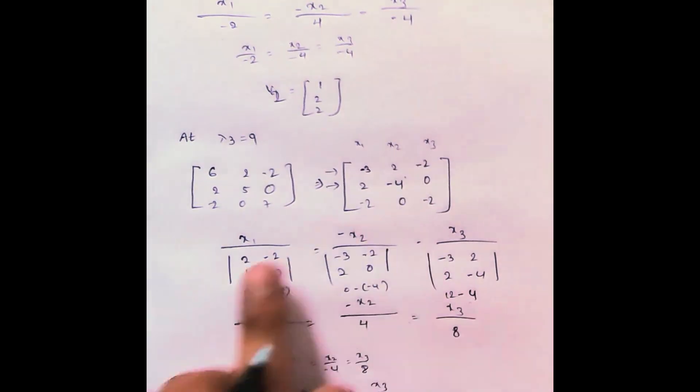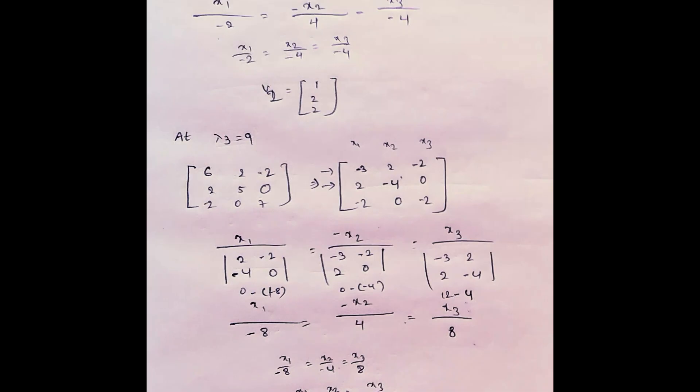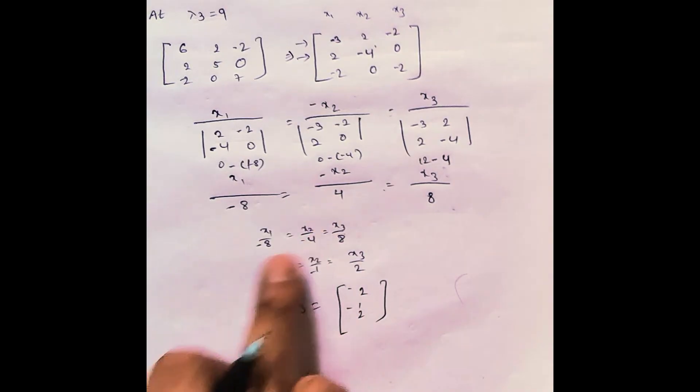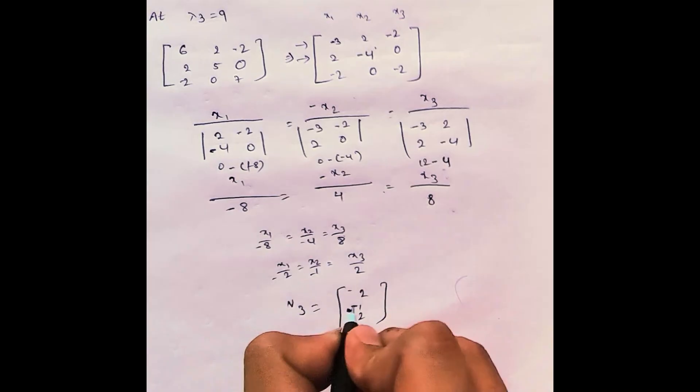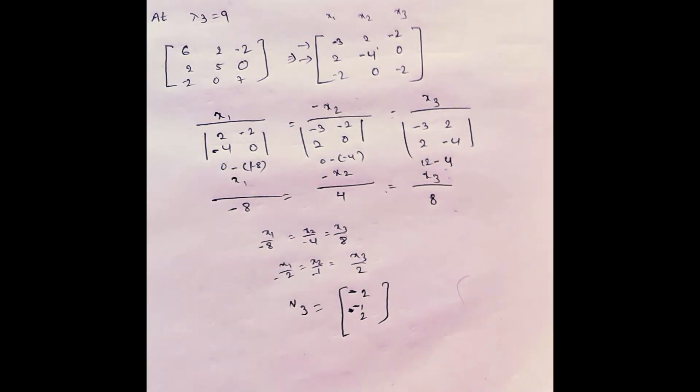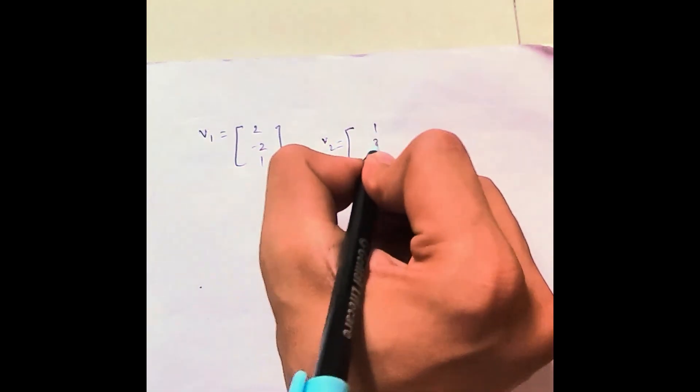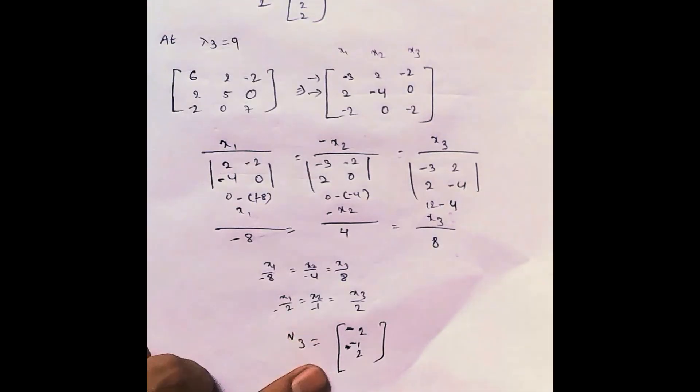I have made a mistake here. The value should be minus 4, so it will be plus 8, and minus of plus 8 is minus 8. This gives minus 8, minus 4, minus 8, leading to x1 by minus 2, x2 by minus 1, x3 by 2. After correction, the three vectors are: V1 equal to (2, minus 2, 1), V2 equal to (1, 2, 2), and V3 equal to (minus 2, minus 1, 2).